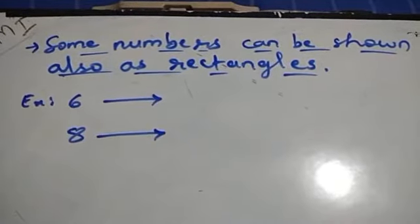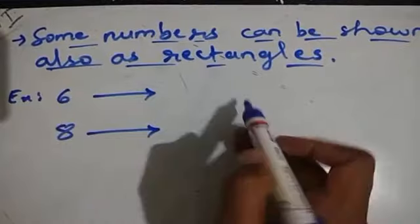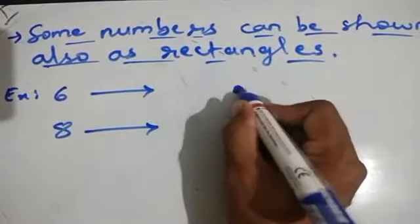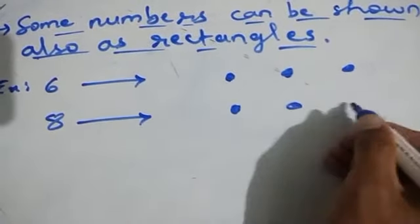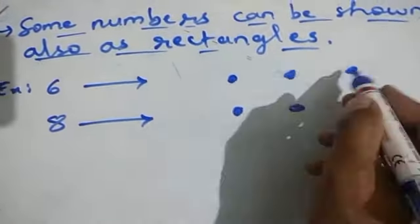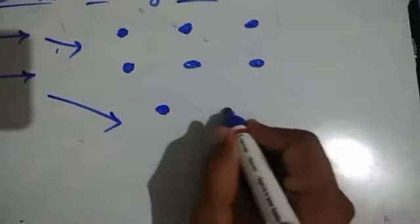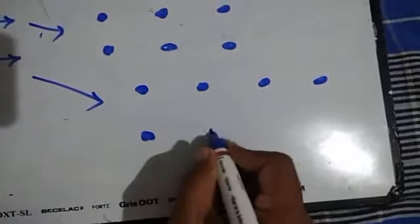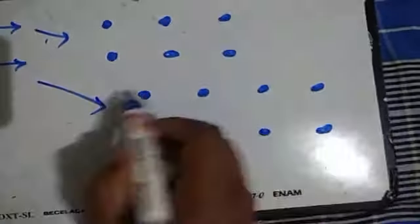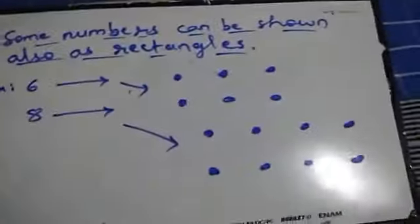In the same way, some numbers can be shown as rectangles. For example, 6 can be shown as a rectangle: 3 dots on one row and 3 dots on another row. Similarly, 8 can also be arranged as a rectangle with dots. So some numbers can be arranged as a rectangle.